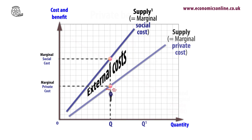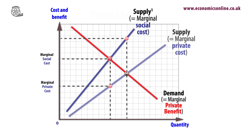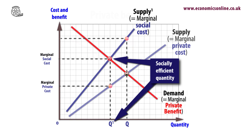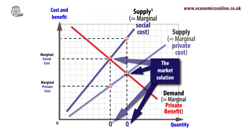The free market is economically inefficient when it ignores externalities. In the case of external costs, the socially efficient quantity is where marginal social benefit equals marginal social cost — at Q1 rather than the market solution at Q, which ignores externalities.